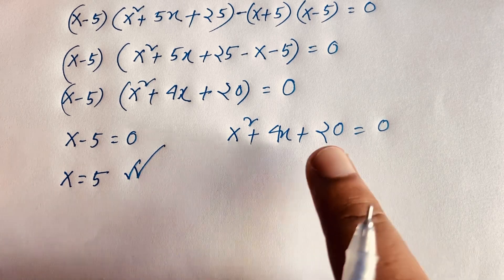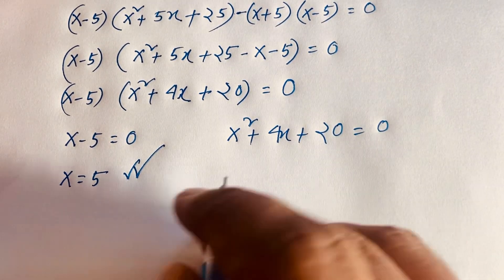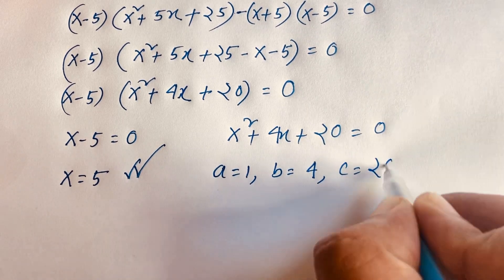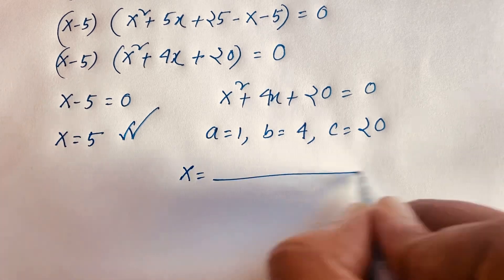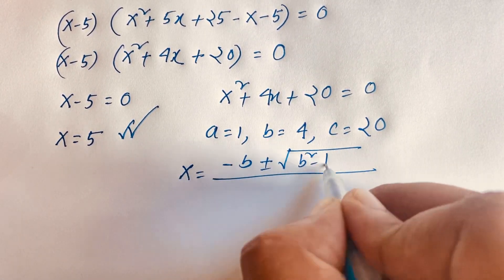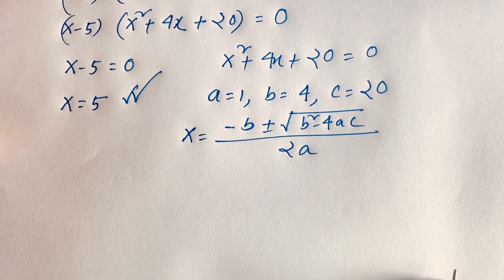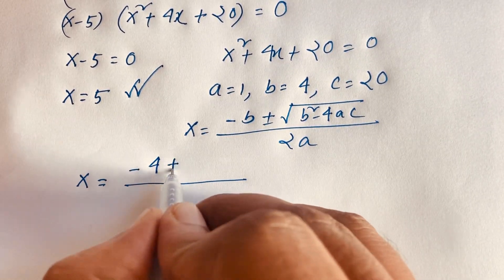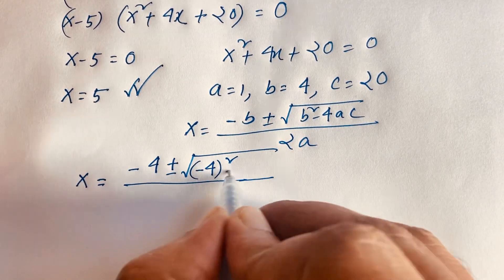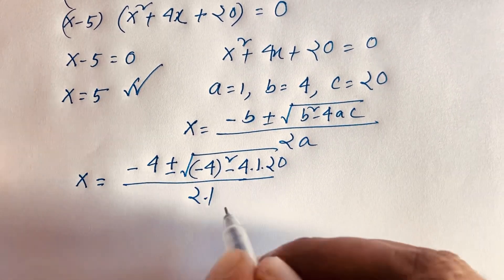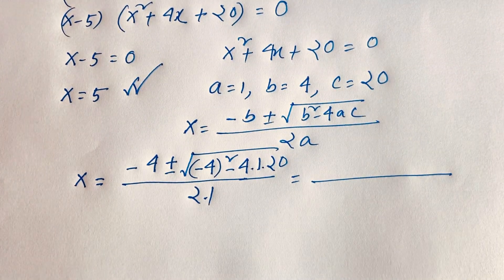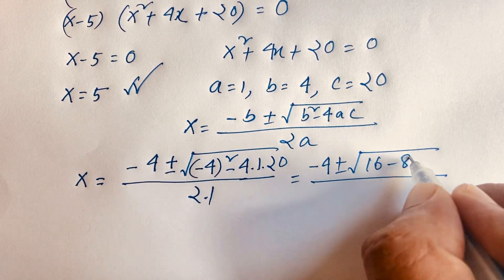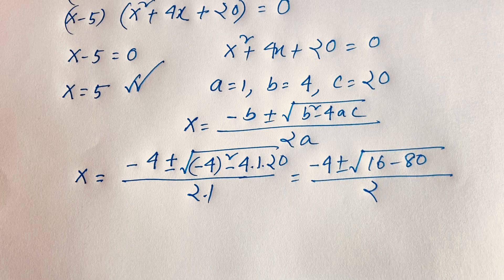For the quadratic x² + 4x + 20 = 0, we have a = 1, b = 4, c = 20. Using the quadratic formula x equals negative b plus or minus square root of (b² minus 4ac) over 2a, we get x equals negative 4 plus or minus square root of (16 minus 80) over 2.